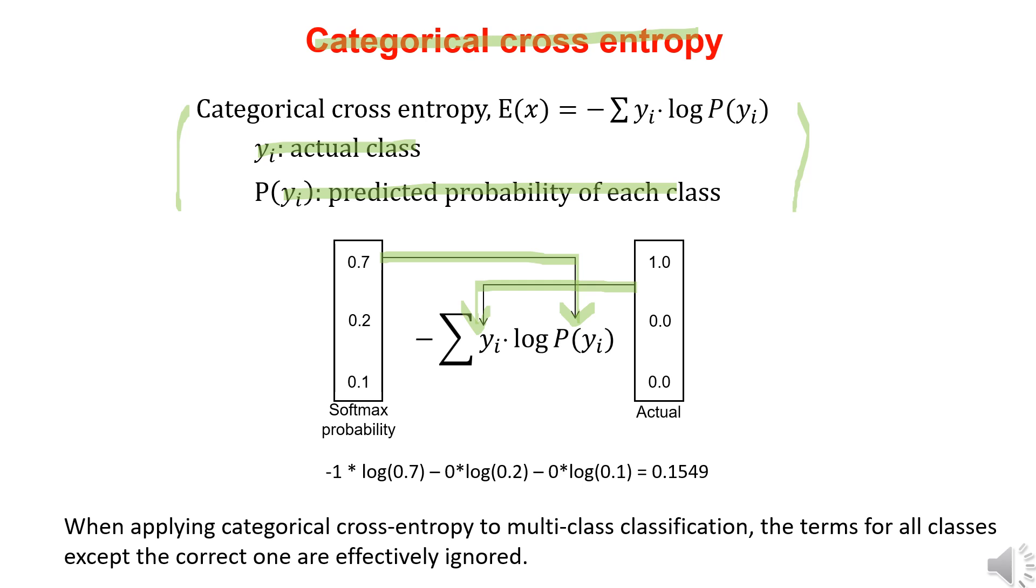As a result, all the incorrect classes become 0 and are eliminated, and only the correct class is considered in the loss function calculation. Therefore, cross-entropy focuses on the correct class to calculate the loss, which reduces unnecessary calculations and makes it more efficient, which is why it is used as the loss function in multi-class classification problems.